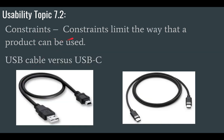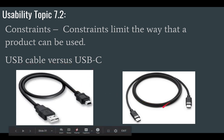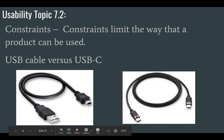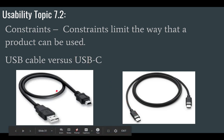Constraints are things that limit the way a product can be used. Take a USB versus USB-C cable: you have to insert the USB cable in the right way or it won't go into the socket. This limits how you can put the cable into the socket. Whereas USB-C cables are symmetrical — you can rotate them 180 degrees and they go in either way. So the USB-C has fewer constraints, and the standard USB is more constrained.